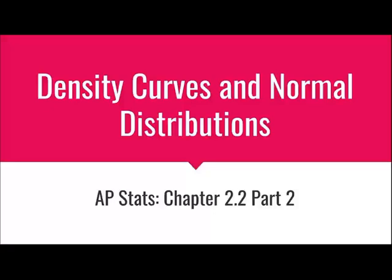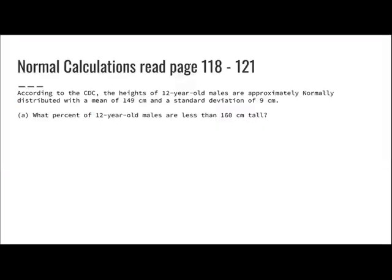This is part two of chapter 2.2, Density Curves and Normal Distributions. We're going to go through some examples on how to calculate percentages and proportions through our normal curves and Z-tables.